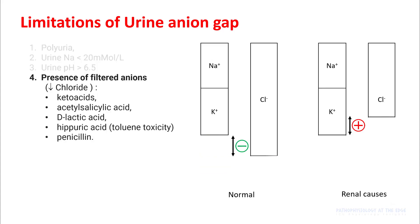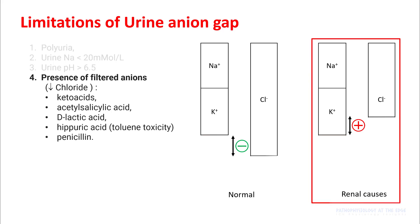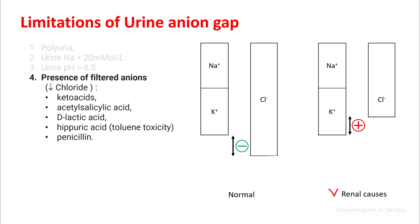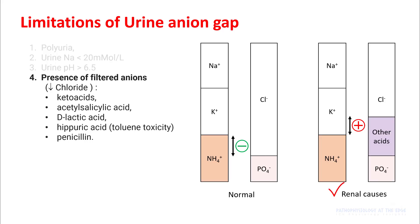Lastly, the presence of filtered anions can also be a problem. As you can see in the figure on the right, the urine anion gap looks positive, suggesting a renal cause. However, on closer inspection there are other acids with negative charges that are reducing the amount of chloride, making the urine anion gap appear positive. So even if your kidneys are working normally, you might see a positive-looking urine anion gap.